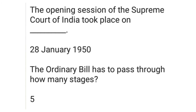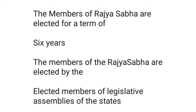The Ordinary Bill has to pass through how many stages? Five stages. The members of Rajya Sabha are elected for a term of six years by the elected members of the Legislative Assemblies of the States — Indirect Elections.